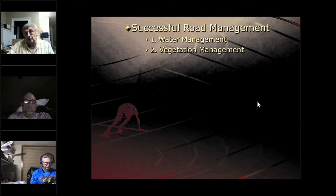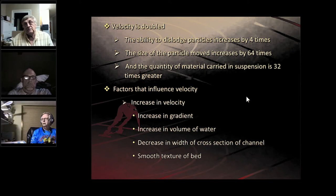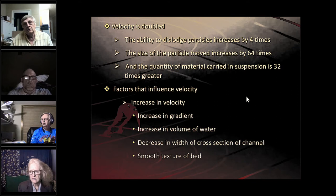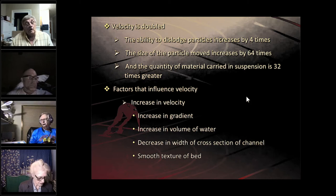Successful road management consists basically of two things: water management and vegetation management. If you have your water managed on your road systems, you've got your road systems managed. When water velocity is doubled, the ability to dislodge particles increases by four times, the size of particle moved increases by 64 times, and the quantity of material carried in suspension is 30 times greater — just from doubling the velocity of water flowing on the road system.